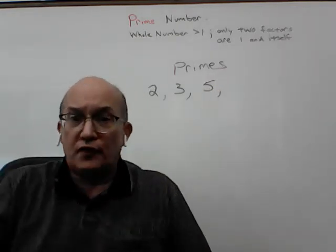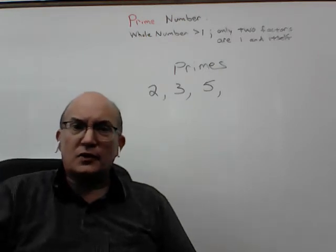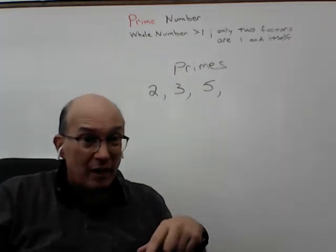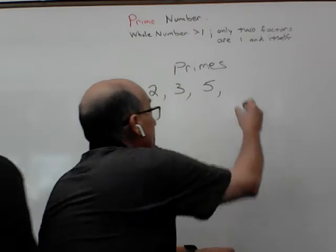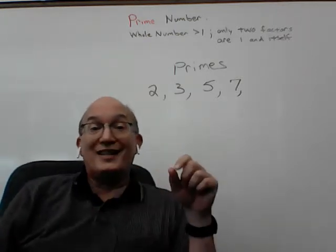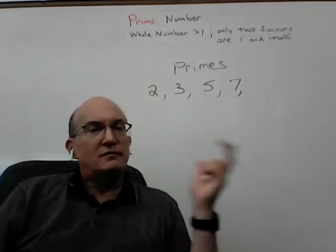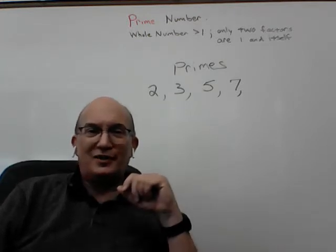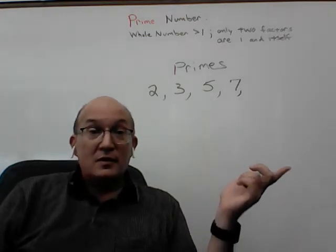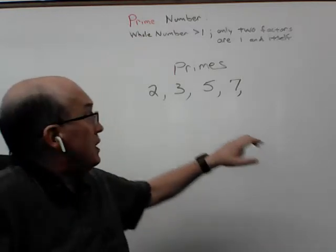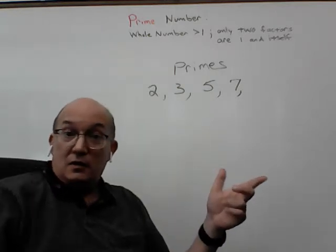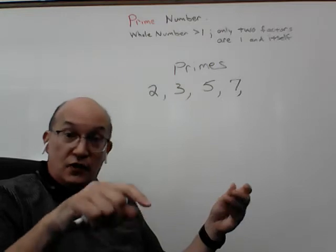Five is prime — the only two whole number factors of five are one times five. Six: six is one times six, but it's also two times three — six is not prime. Seven is prime — the only two whole numbers that multiply to seven are one and itself. Eight is not prime — it has two as a factor. Now we're going to start to make some generalizations.